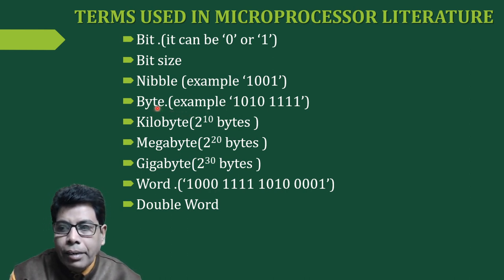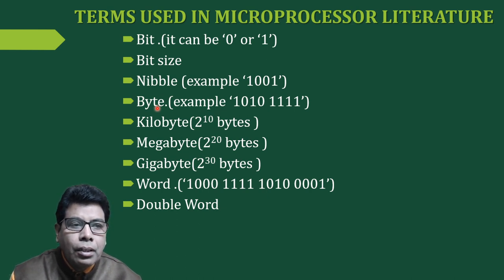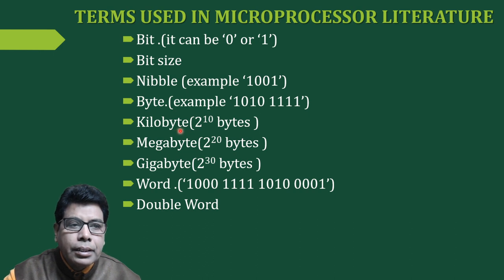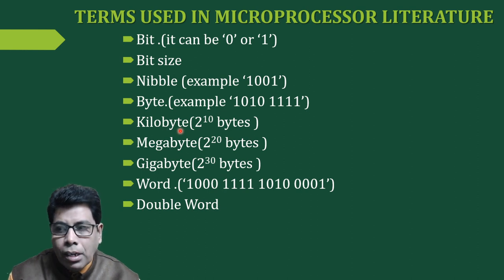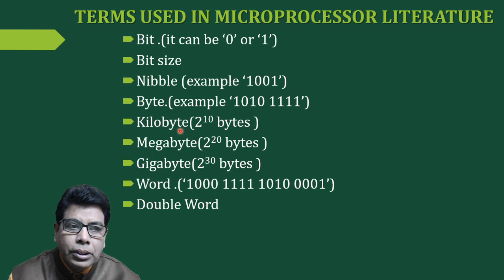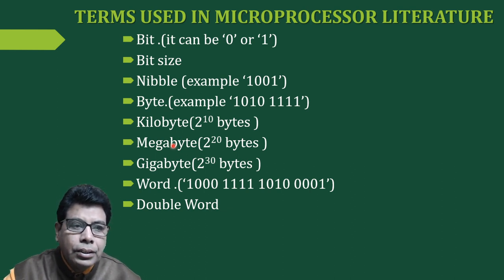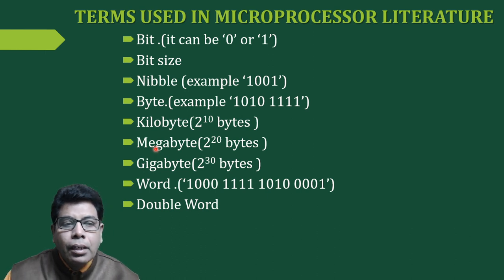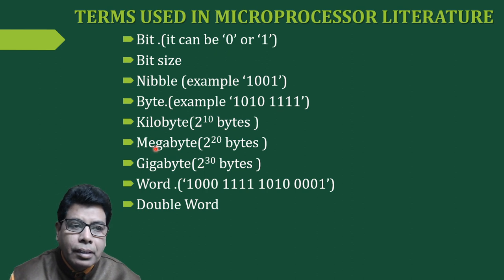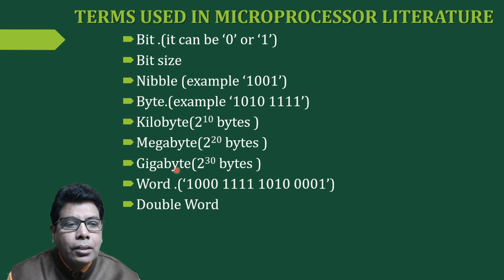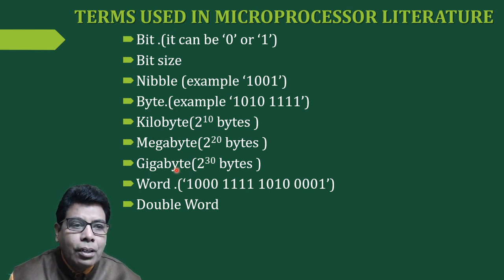The next term is byte. A byte is nothing but an 8-bit binary digit — this is an important unit. Then, kilobyte: a collection of 1024 bytes is called a kilobyte, since 2 raised to 10 equals 1024. And 2 raised to 20 bytes equals 1 megabyte. A gigabyte is equivalent to 2 raised to 30 bytes.